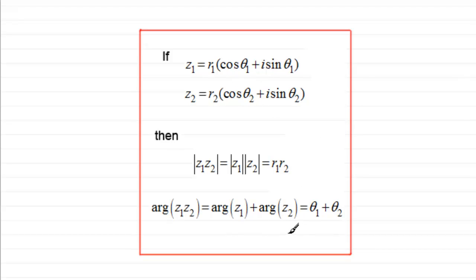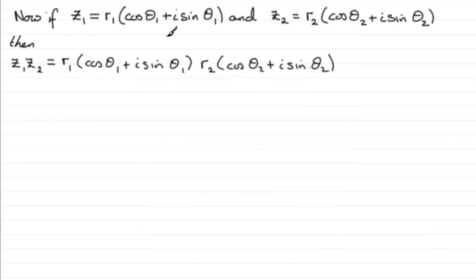This is something you need to remember, but if you're called upon to prove it, here's the proof. We take Z1 equal to R1 times (cos theta 1 plus i sine theta 1) and Z2 equal to R2 times (cos theta 2 plus i sine theta 2). If we multiply them together, we have those two complex numbers being multiplied.